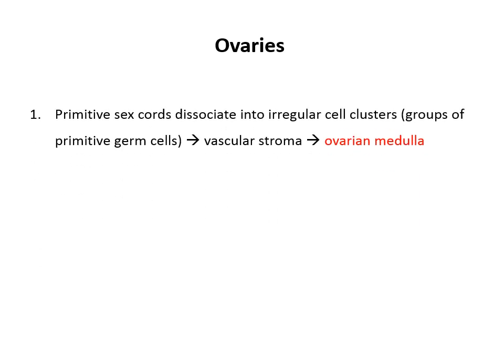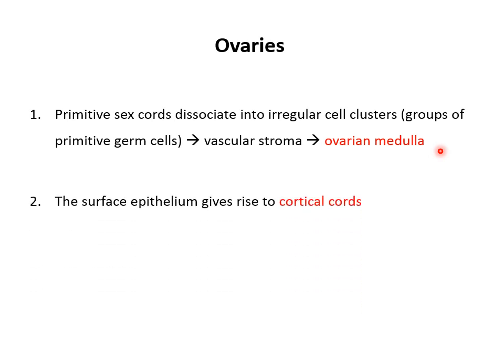In the development of the ovaries, the absence of the Y chromosome results in the following: the primitive sex cords dissociate into irregular cell clusters, and these clusters contain groups of primitive germ cells. They occupy the medullary part and later are replaced by vascular stroma, which forms the ovarian medulla. The surface epithelium of the female gonad gives rise to cortical cords.